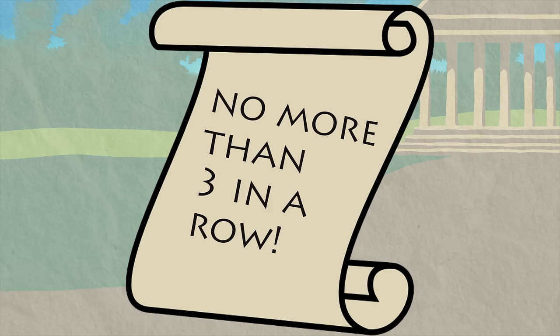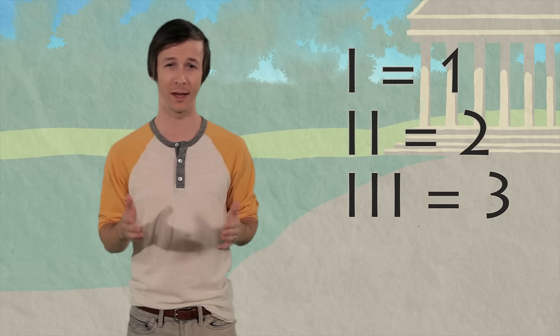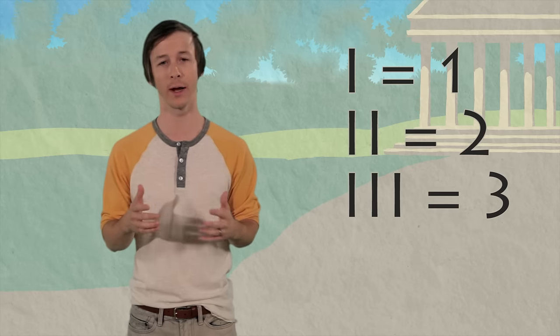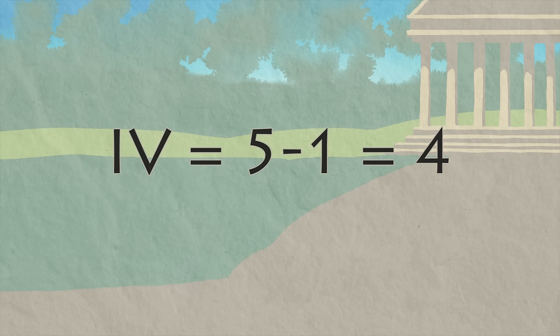But there's a tricky part. You can't put more than three of the same Roman numeral together in a group. So to get four, you can't write IIII. Instead, you write it like this, IV. That means take one away from five to get four.